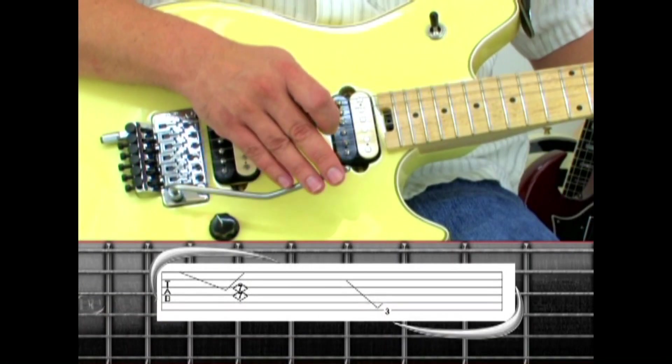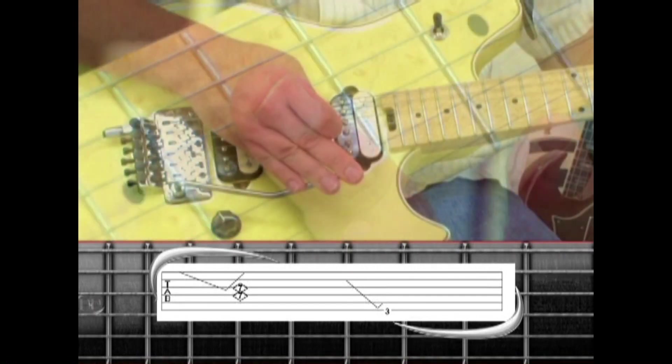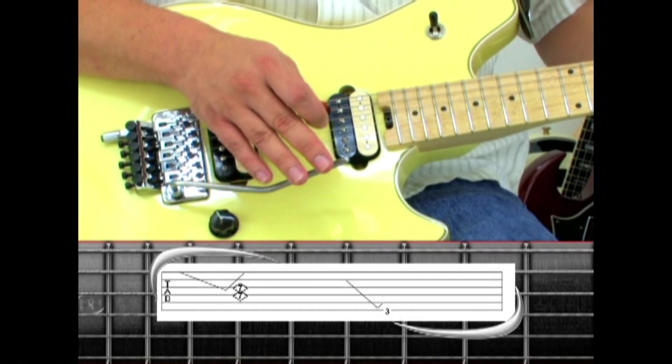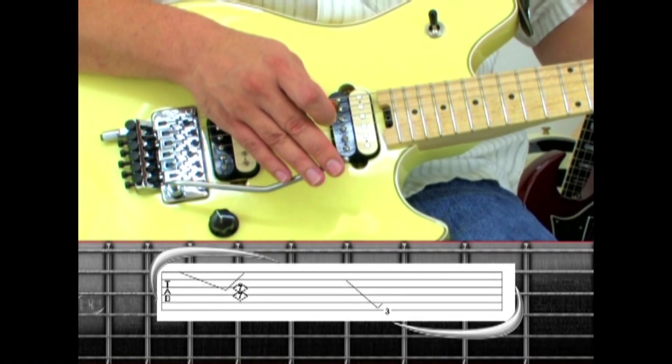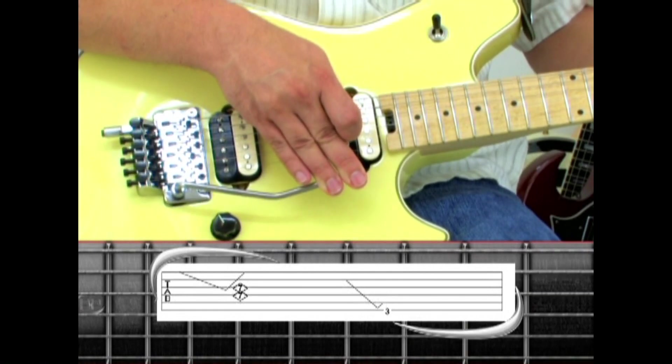Depress the bar and hit the seventh fret harmonics on the third and fourth string as the bar returns. End this section with a tremolo bar dive and return while fretting the sixth string third fret.